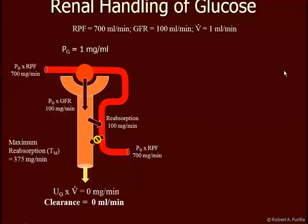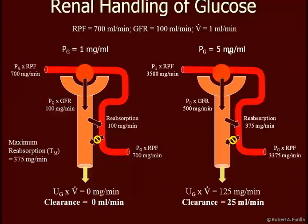Let's look at glucose handling. We have a plasma glucose concentration of 1 milligram per milliliter, which is the same as 100 milligrams per deciliter. Renal plasma flow is 700 milliliters per minute. Our GFR is 100 mL per minute times 1 mg/mL, so we're filtering 100 milligrams per minute. We're reabsorbing 100 milligrams per minute — we reabsorb virtually all the glucose that's filtered until the glucose concentration rises to exceed the maximum reabsorption rate, T sub M, which is 375 milligrams per minute. So we filter 100, reabsorb 100, there's no secretion, and nothing comes out in the urine. Clearance is zero.